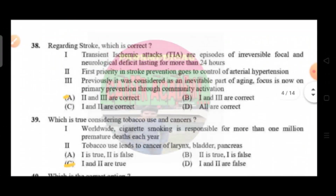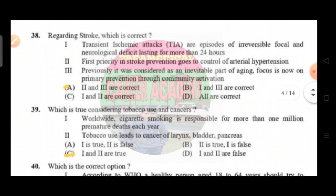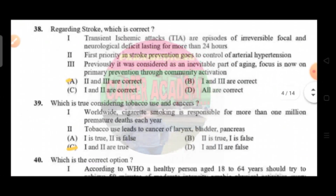Question number 38: regarding stroke, which is correct. Option one — transient ischemic attack is an episode of reversible focal neurological deficit lasting less than 24 hours; option two — first priority in stroke prevention is to control arterial hypertension; option three — previously it was considered an invariable part of aging, but focus is now on primary prevention through community activation. The correct answer is option A, that is second and third are correct.